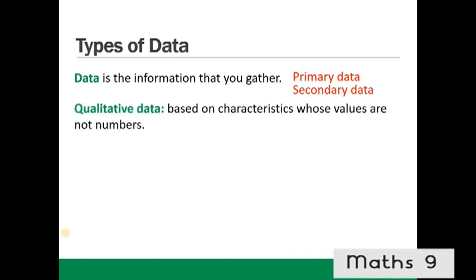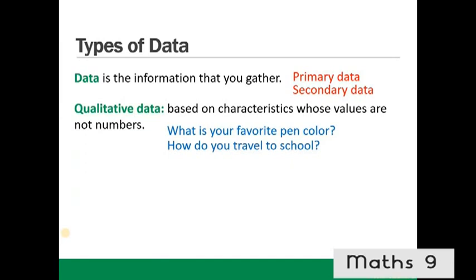Qualitative data is based on characteristics whose values are not numbers. For example: what is your favourite pen colour? How do you travel to school? What brand of computer do you own?